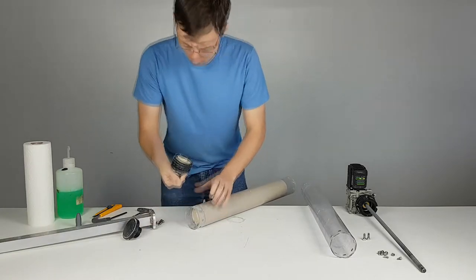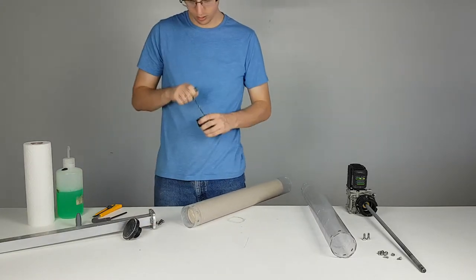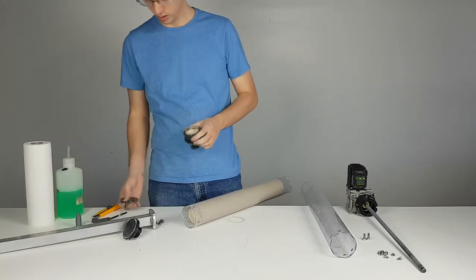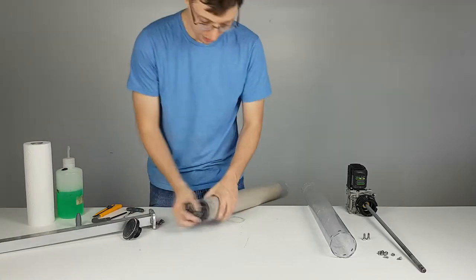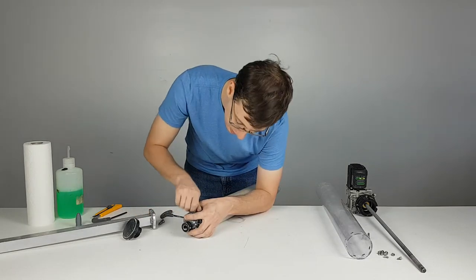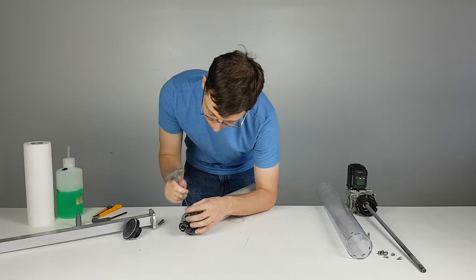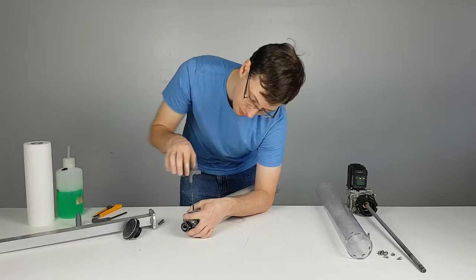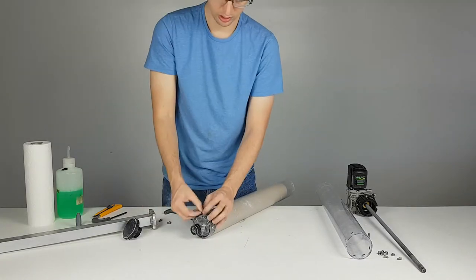If there is an airtight seal you can poke a hole through the remaining clay that is in the nozzle adapter. To prevent threads from stripping it is safer to start all of the screws by hand and then use a tool to secure them the rest of the way.